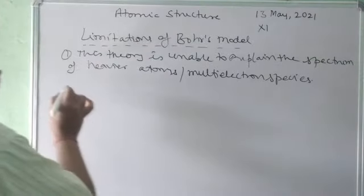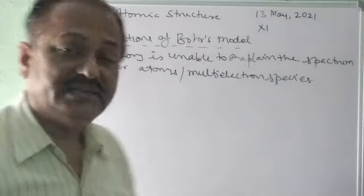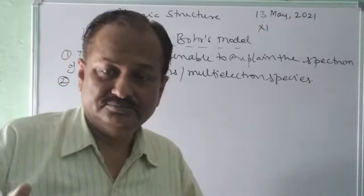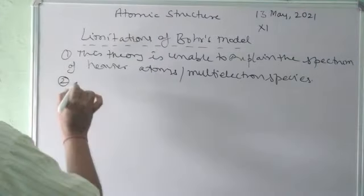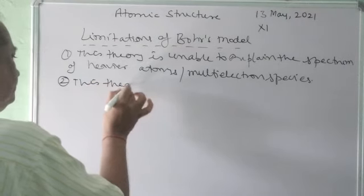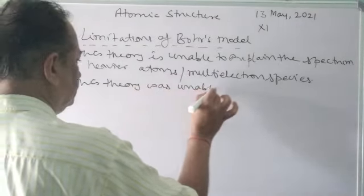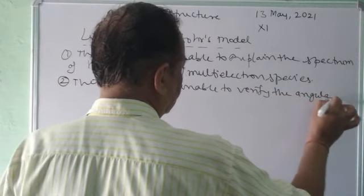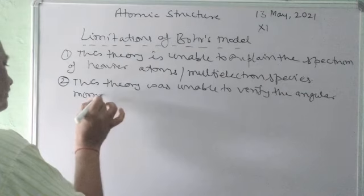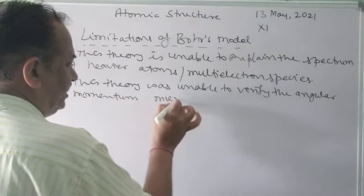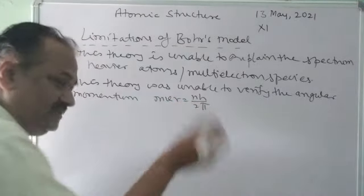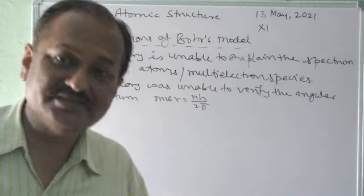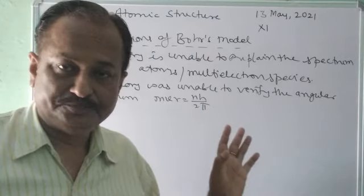The second objection is that this theory was unable to explain the reasoning behind the angular momentum of the electron. This theory was unable to verify the angular momentum — MVR equals nh upon 2π. The balancing of electrons was not explained, meaning how electrons are balanced inside an atom. So this is the second objection and second drawback.